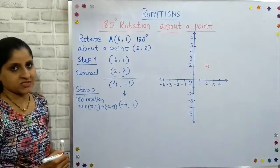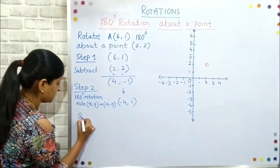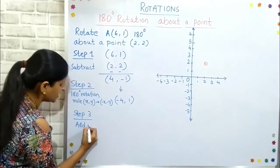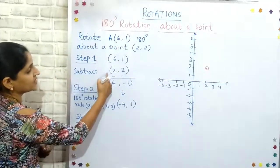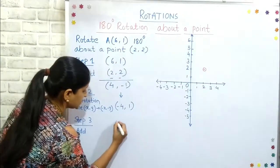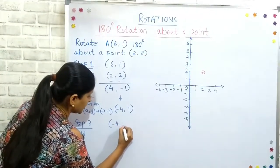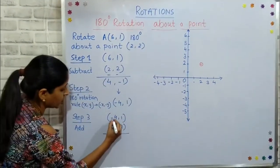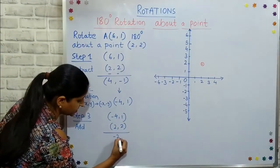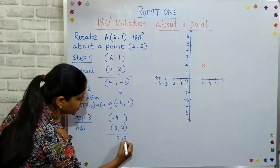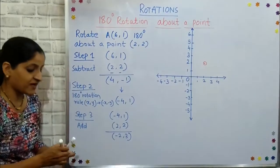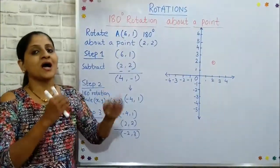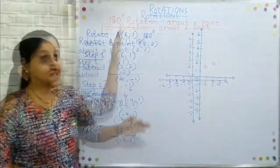After that comes step number three, in which we add back the point which we subtracted. We had subtracted (2,2), so in step three we add it again. After adding, -4 and 2 become -2, and 1 plus 2 becomes 3. So the final coordinates of point A (6,1) after 180 degree rotation are (-2, 3).